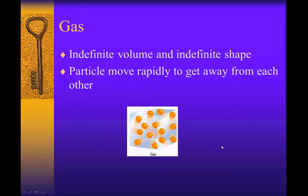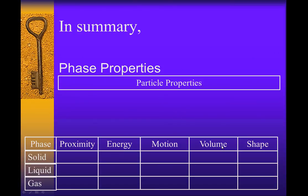Let's summarize all that up real quick. We're going to look at the phase, proximity—how close everything is—how much energy it has, how it's moving, and its volume and shape. Let's start with solids. They're very close together—we're talking about the particles. Not a lot of energy. If you could look at your desk with an electron microscope, you would see the little particles in there actually vibrating, but we can't feel it because it's so small. The motion is vibrational, has a definite shape, definite volume.